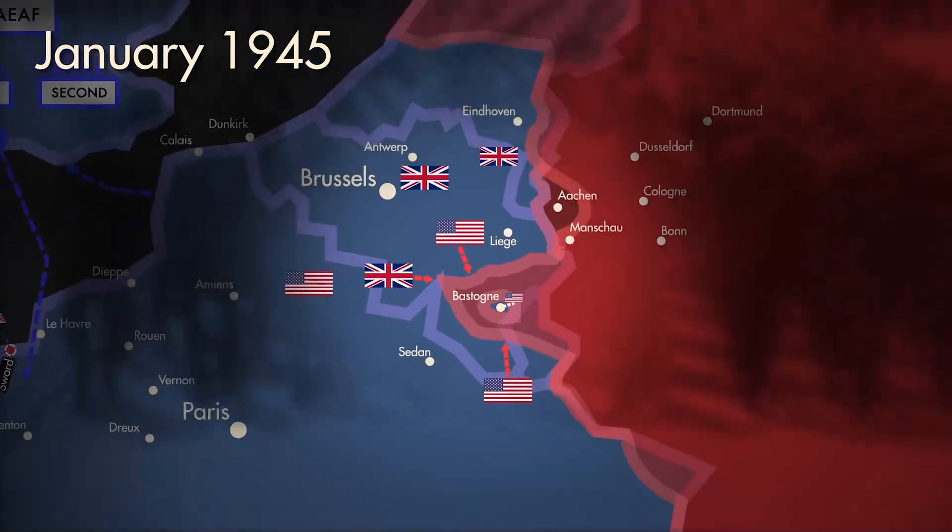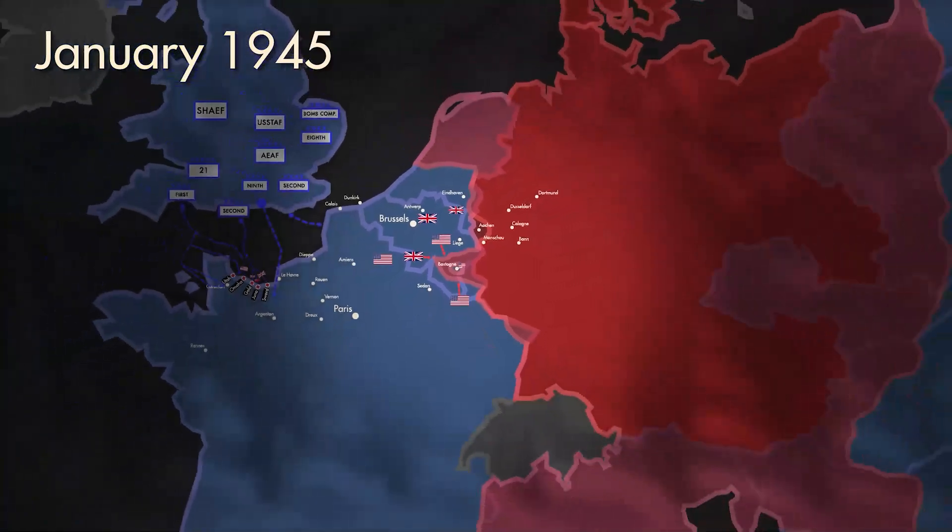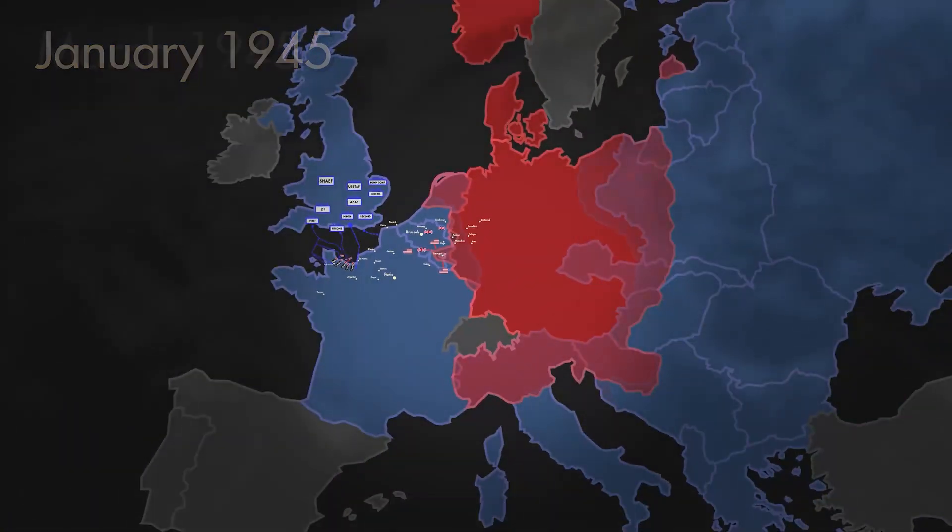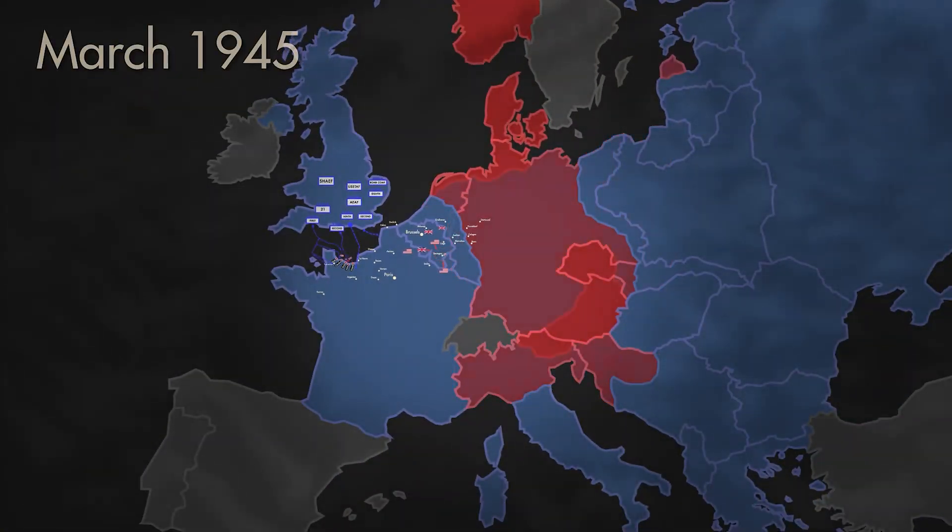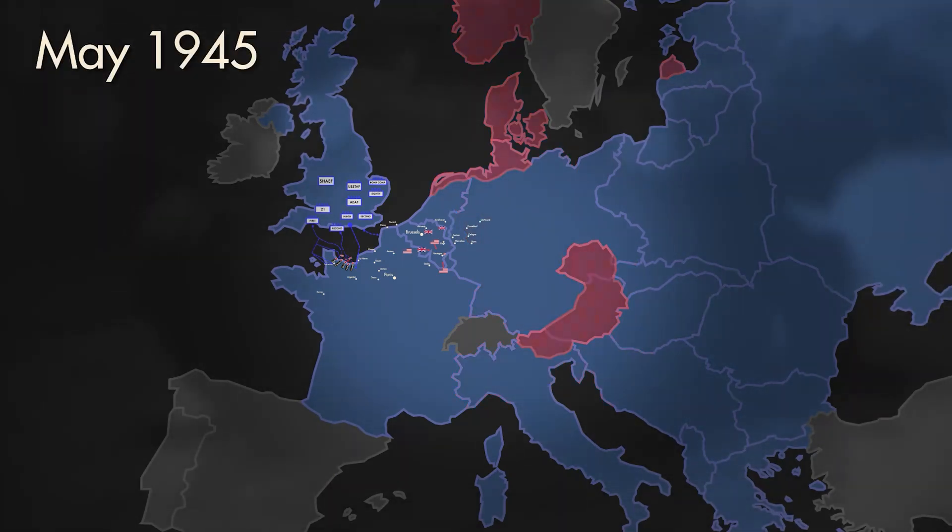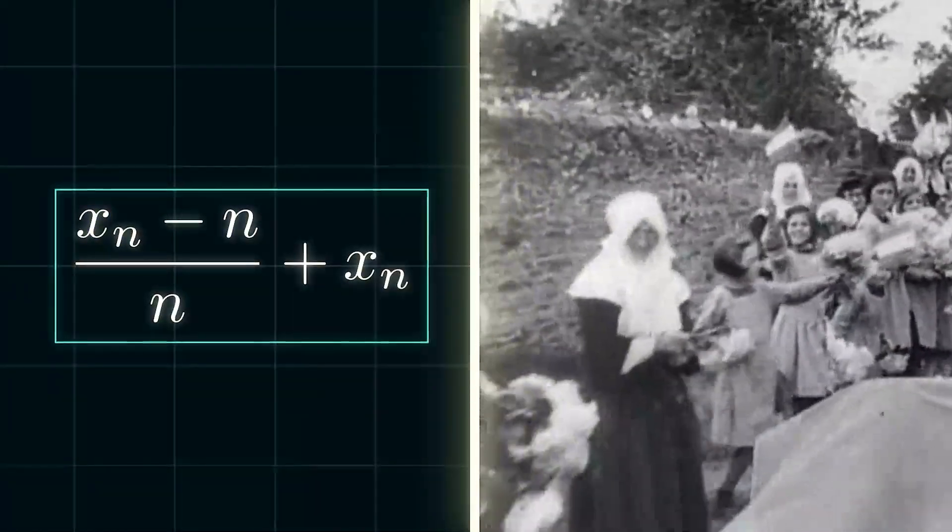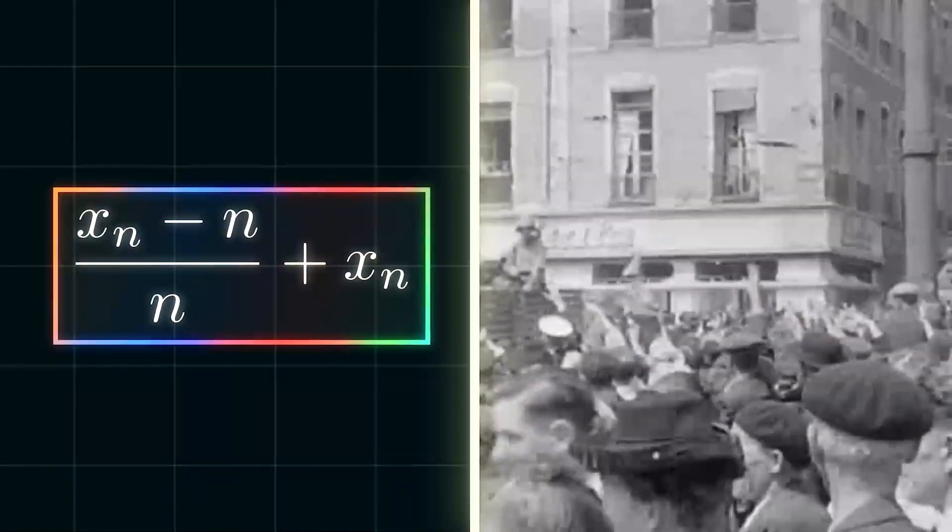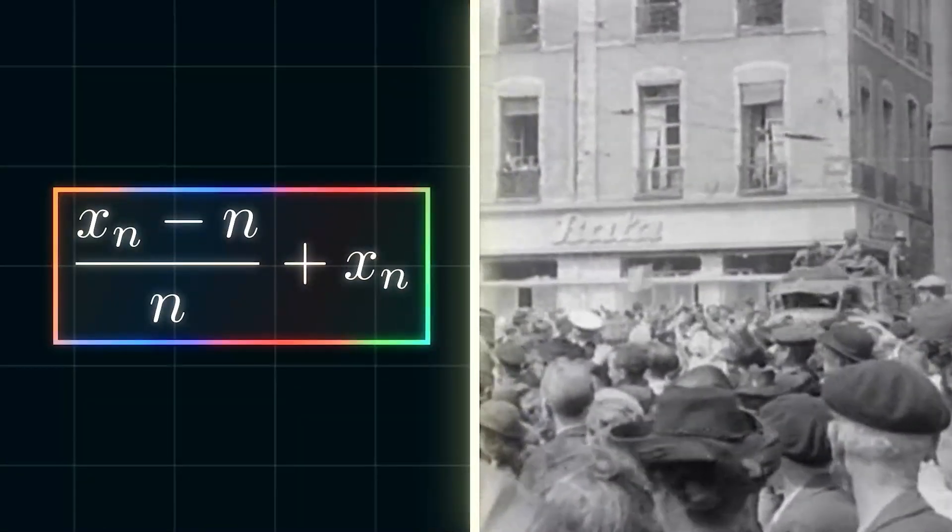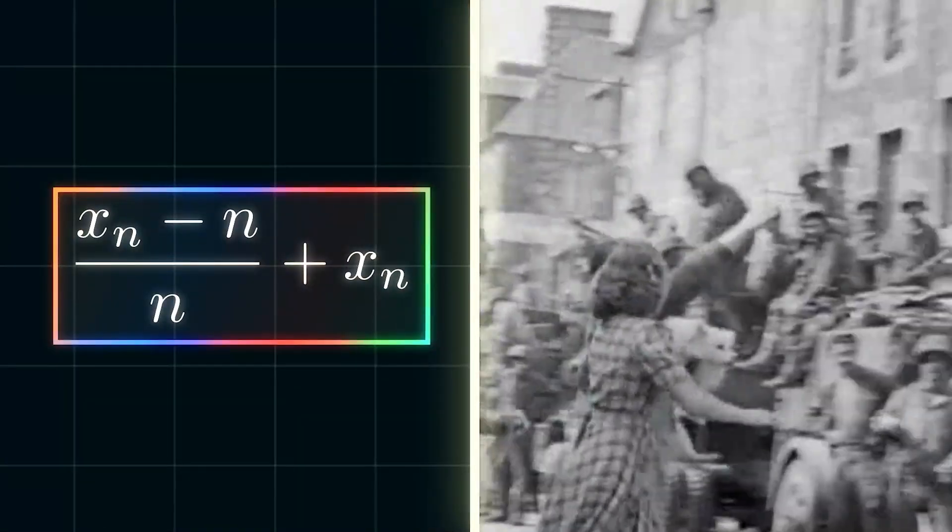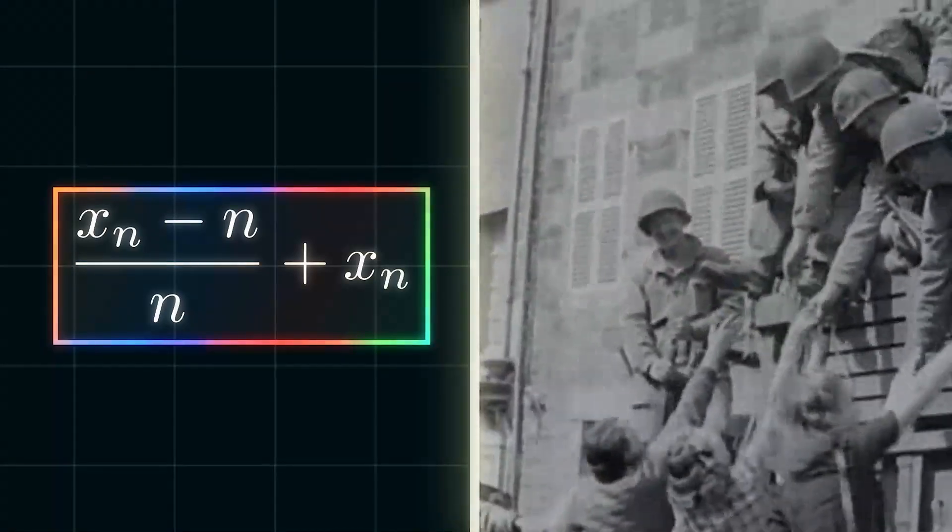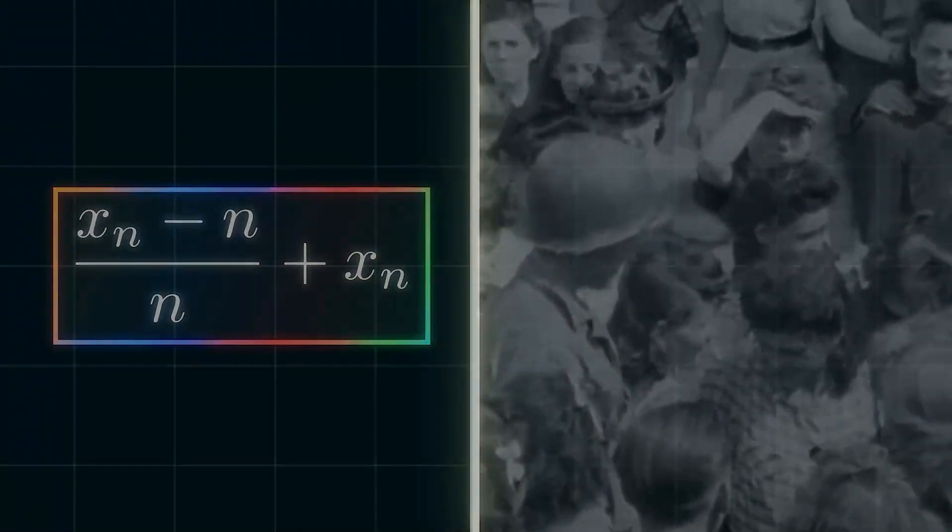Throughout the rest of the war, accurate estimates of German tank production continued to be important for the Allies. As they advanced towards Berlin and the end of the war, they used their knowledge to plan their strategies and allocate resources accordingly. In the end, the Allies' efforts paid off, as they were able to use their knowledge to help them win World War II. The success of the D-Day landings and the eventual victory of the Allies on VE Day were both made possible, in part, by the work of analysts who worked to solve the German tank problem.